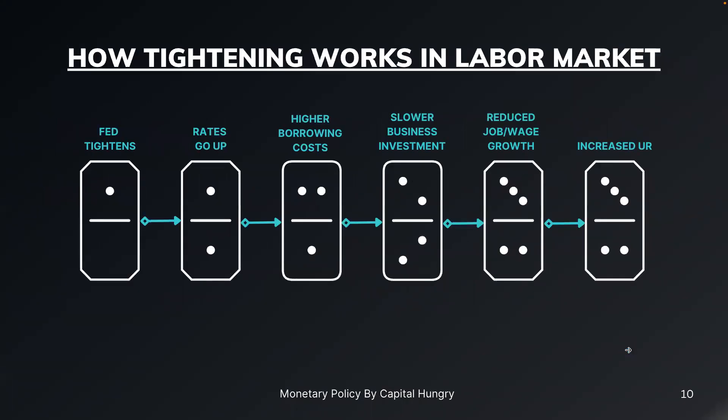How does tightening work in the labor market? First, the Fed tightens and rates go up, leading to higher borrowing costs. Since the Federal Reserve increases interest rates, it makes borrowing more expensive for businesses and individuals. Next is slower business investment — with higher borrowing costs, businesses become more cautious and may reduce their investment plans. This can lead to slower job creation and reduced demand for labor.